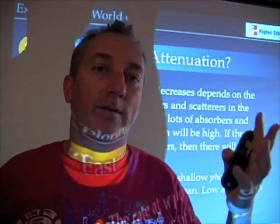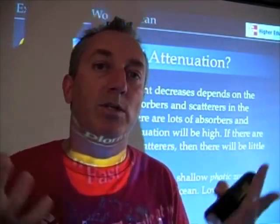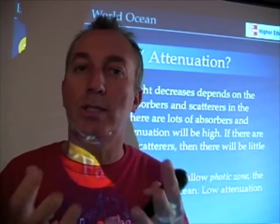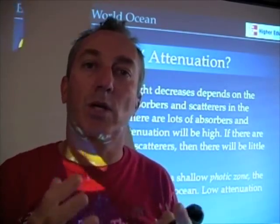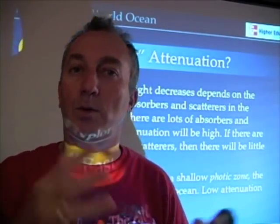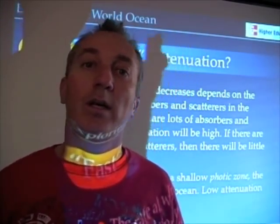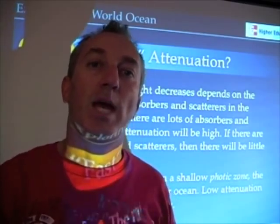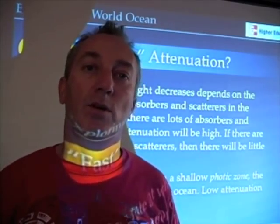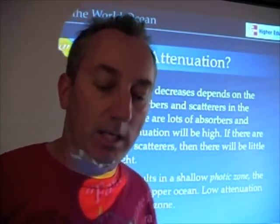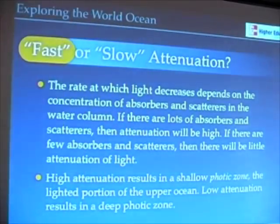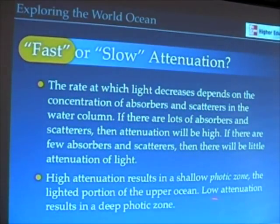If we have greater concentrations of absorbers and scatterers, light diminishes very quickly. If we have fewer, light penetrates very deeply. The depth to which light penetrates in the water column is called the photic zone.